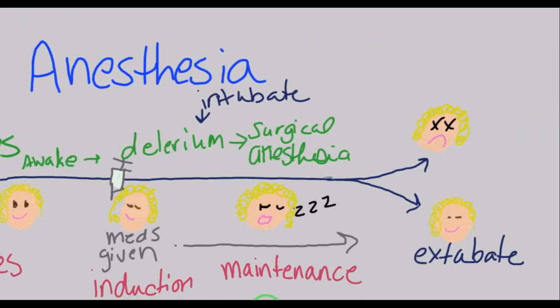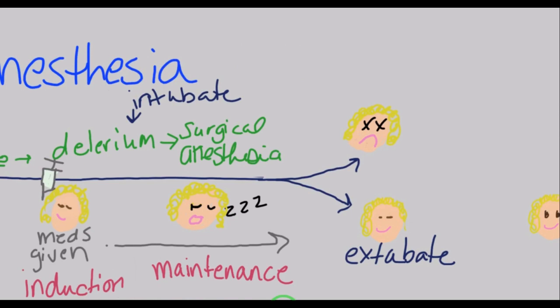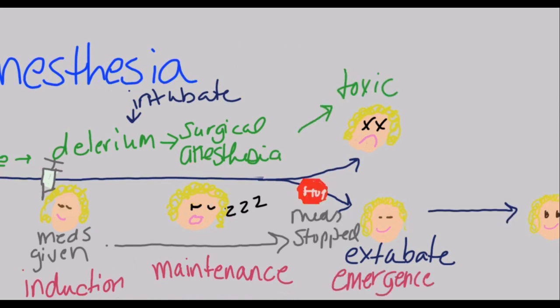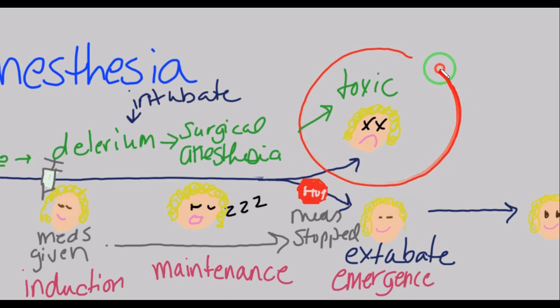From here, there are two possible paths. We hope the anesthesiologist has correctly calculated the drug amounts the patient can tolerate and is continuously regulating dosing based on vital signs. We do not want to reach the toxic stage, where too much anesthesia has been given — this can be fatal for the patient.